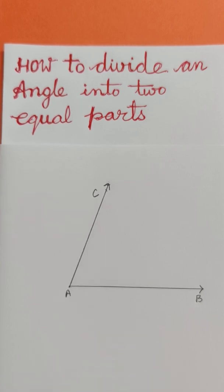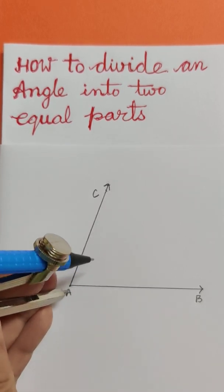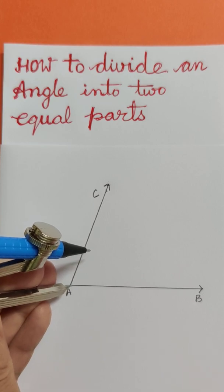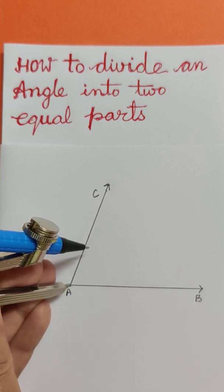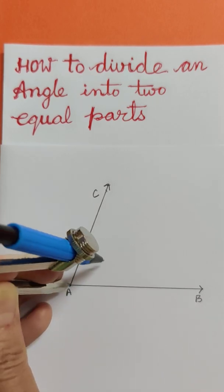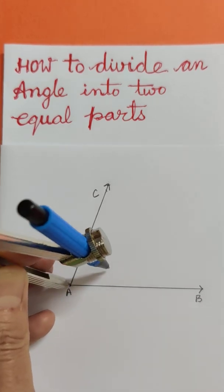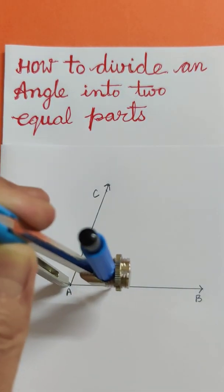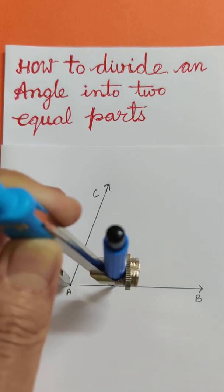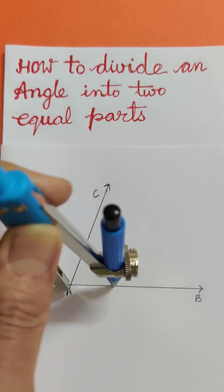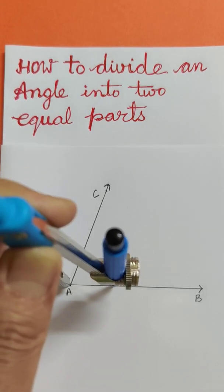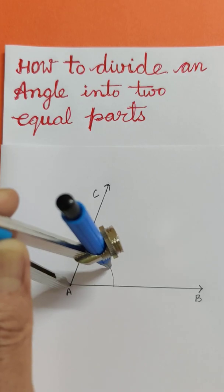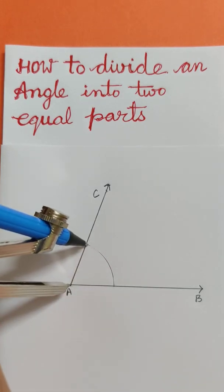We shall take a compass and, taking A as the center, putting the needle of the compass at A, we draw an arc like this, starting from ray AB till ray AC.